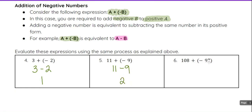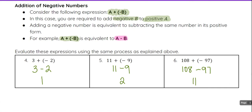108 plus negative 97 — again, we can just do 108 minus 97, and when we do that we get 11.